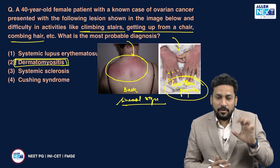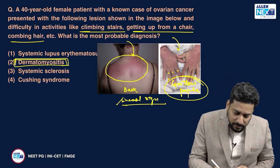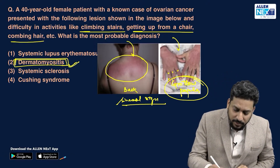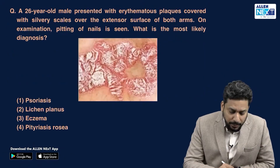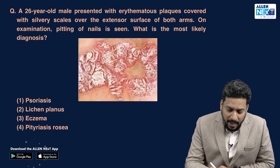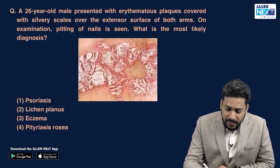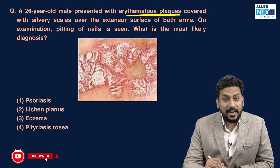Similarly, around the eyes, patients start developing erythematous or violaceous rashes, which is known as the heliotrope rash. All these — Gottron's papules, shawl sign, and heliotrope rash — are suggestive of dermatomyositis along with weakness of muscles.